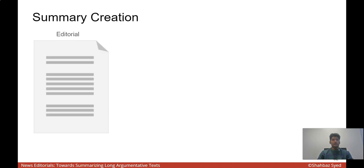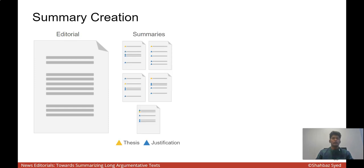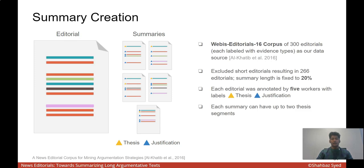Using these list of dimensions, we now move to our summary creation. We show an editorial to five annotators. We ask them to label each of the segments as either thesis or justification. As our data source, we chose the editorials corpus from Al-Khatib and others because of its evidence types labels. This allows us to analyze the argumentativeness of our summaries in more detail. We removed short editorials and we fixed the summary length to 20%. We also allowed up to two thesis segments per summary.